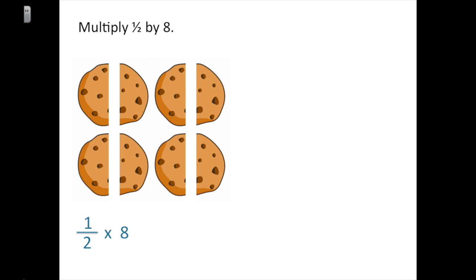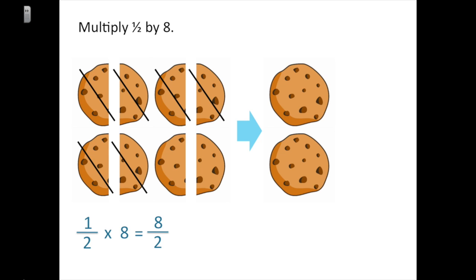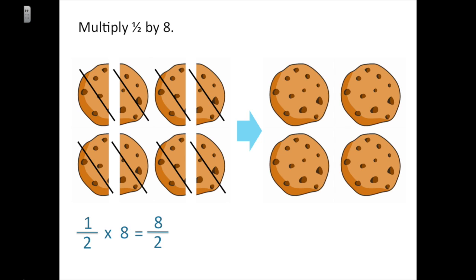Here I'm asked to multiply one-half by eight. This time I'm going to illustrate it with cookies — I have eight half cookies. One-half times eight equals eight halves, and you can see in the picture that I have eight halves. Now I want to show it as a whole number. If I add two halves together I get one whole cookie, and I keep pairing halves to get a second, third, and fourth whole cookie.